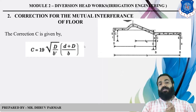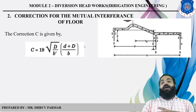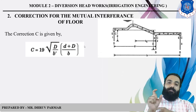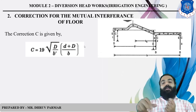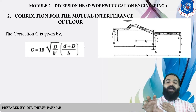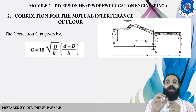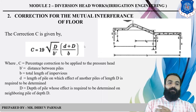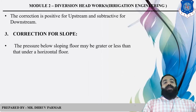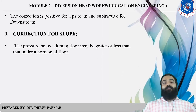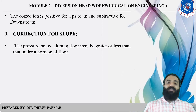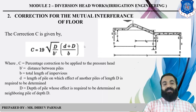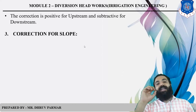Capital D refers to the upstream depth of pile when calculating for the upstream case, and small d refers to the downstream pile depth. B and the distance between piles can be read from the diagram. The mutual interference correction is positive for the upstream side and subtractive for the downstream side.